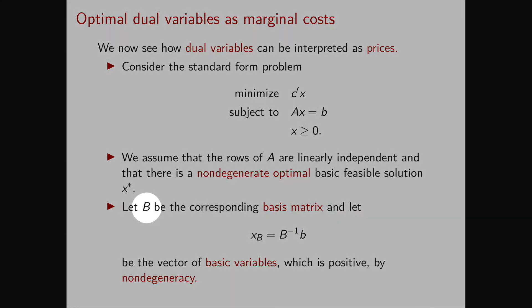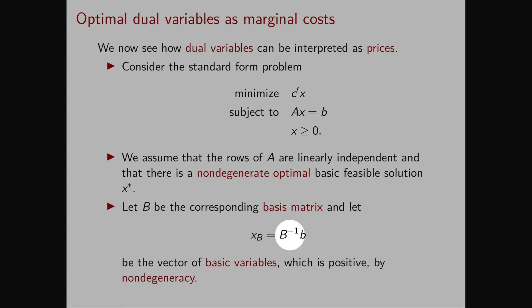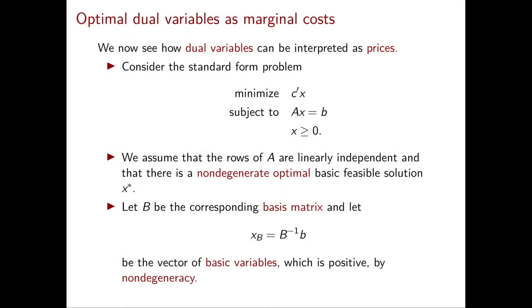Let B be the corresponding basis matrix. Then we can use the matrix B to write down the basic variables as XB equal to B inverse B. Since we're assuming that X star is non-degenerate, we have that XB is strictly positive.